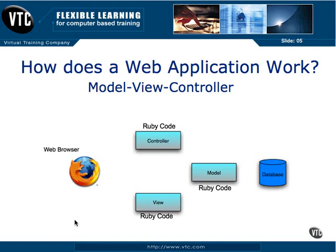Let's take a look at how a web browser interacts with a Ruby on Rails application. A web browser makes a request — generally just a URL — and that request goes to a controller. That controller will interact with the model, and the model will interact with the database, giving back live information. The model gives that back to our controller, the controller then generates a view, and the view finally kicks back HTML and JavaScript to our web browser, which displays that information.